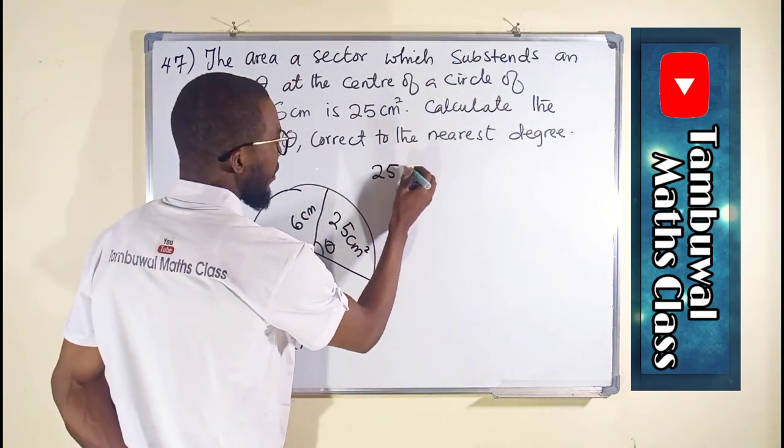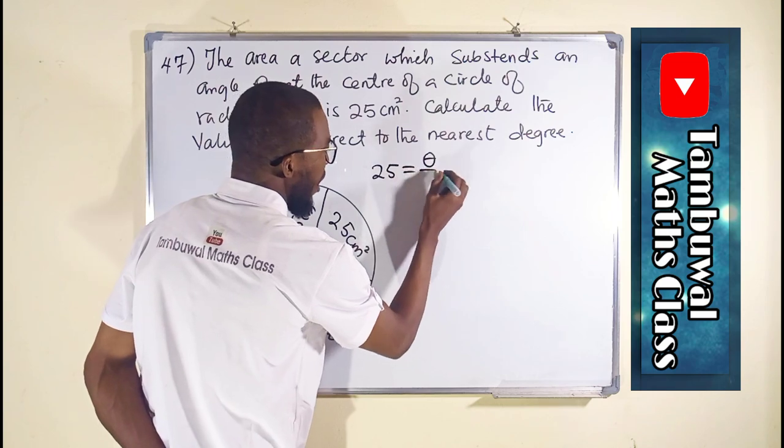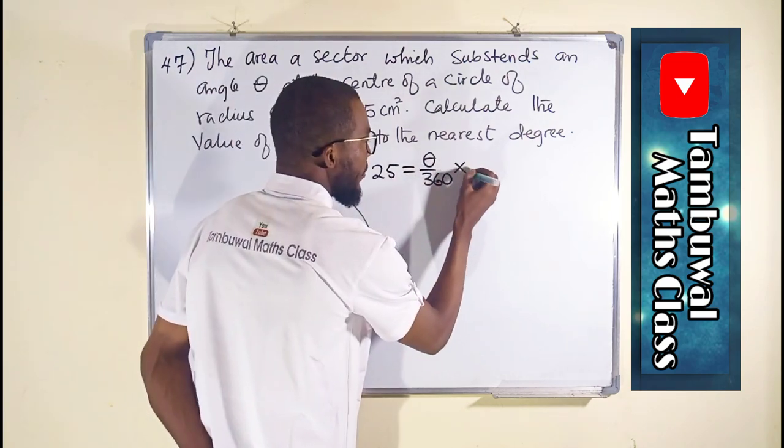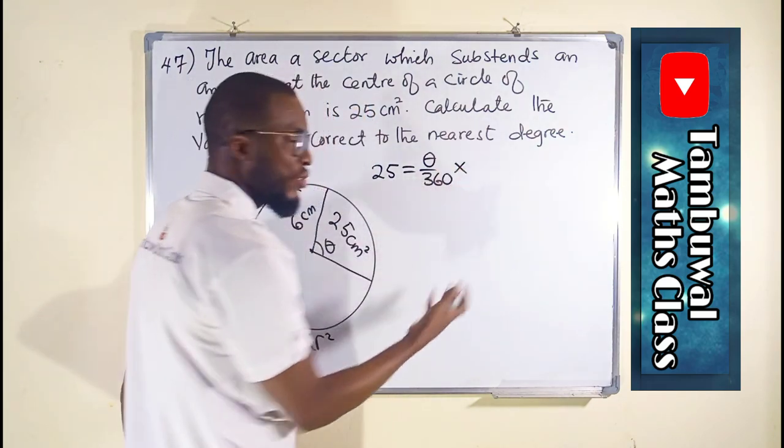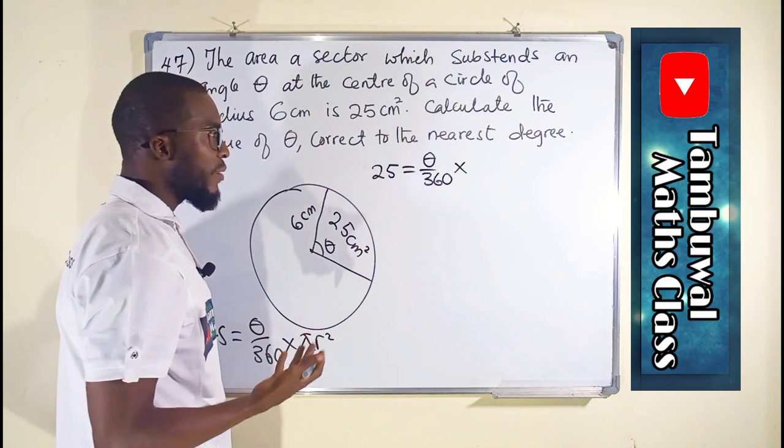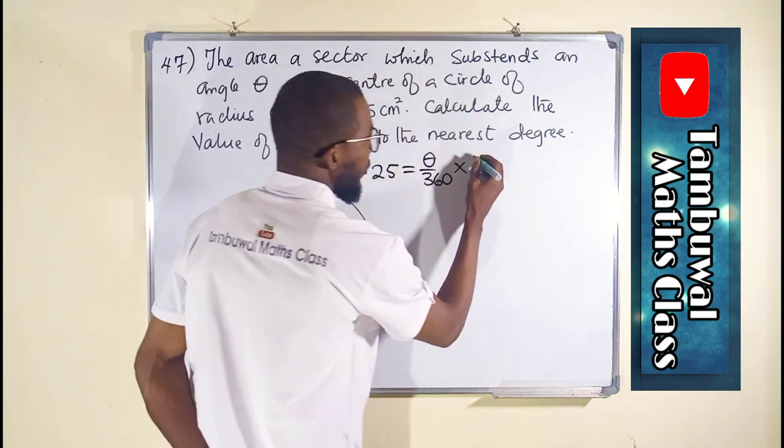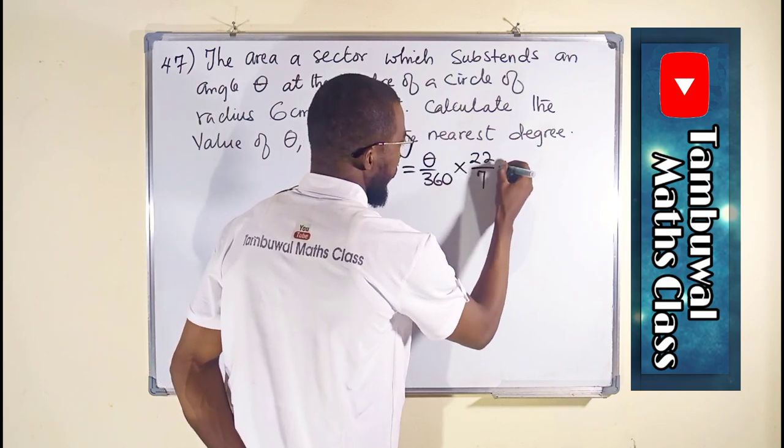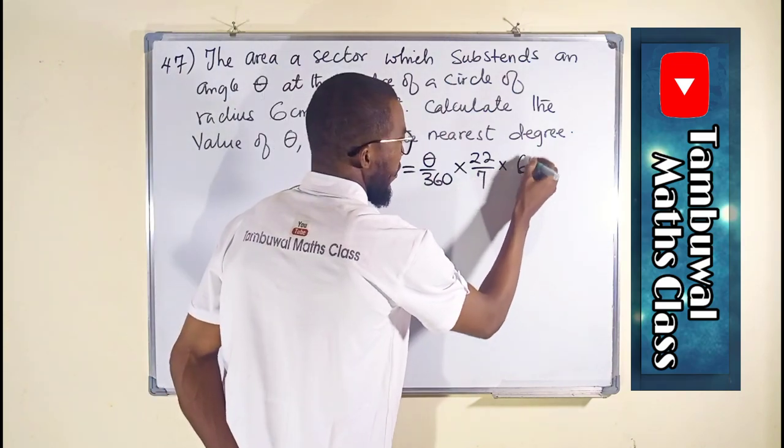So we have 25 equals that angle we are looking for out of the total angle of the circle times pi. We can use 22 over 7. In Nigeria commonly we use 22 over 7 as pi when it is not given from the question. So we have 22 over 7 times r squared which is 6 squared.